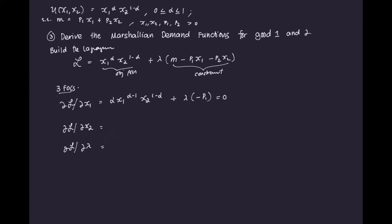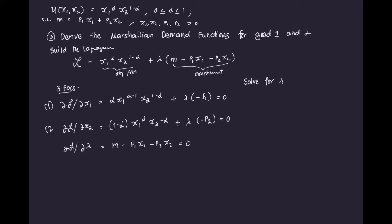Deriving with respect to x2, we get (1−α)·x1^α·x2^(−α) — because 1−α−1 is negative alpha — plus lambda times negative p2, equal to zero. And last, deriving the constraint with respect to lambda, we just get our constraint: M minus p1·x1 minus p2·x2 equal to zero. Let's call these equations 1, 2, and 3. We're going to solve for lambda in equations 1 and 2.